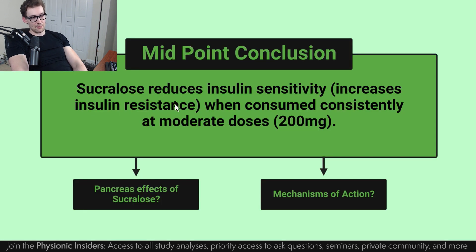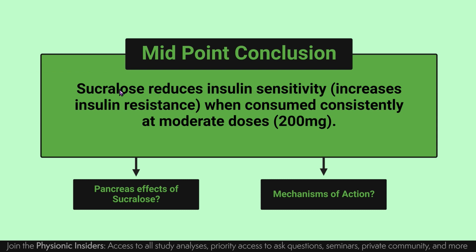What this means is that sucralose does seem to reduce insulin sensitivity based on this study, meaning it also increases insulin resistance when consumed consistently at moderate doses — about 200 milligrams, or a few diet Cokes worth per day. If you add it to your foods regularly, you will see an effect on your insulin sensitivity. And keep in mind, this is not in people who are diabetic or obese — it's in perfectly normal weight, otherwise healthy individuals who still see this worsening of their insulin sensitivity.